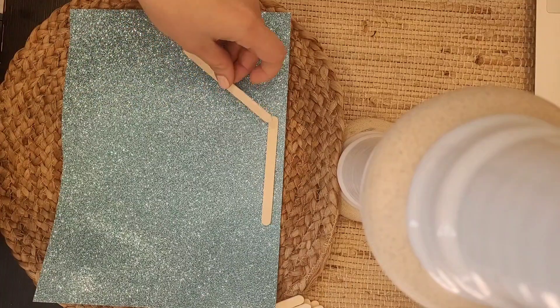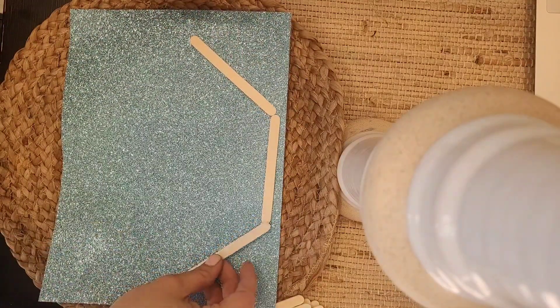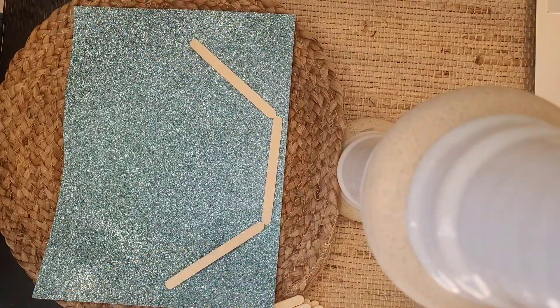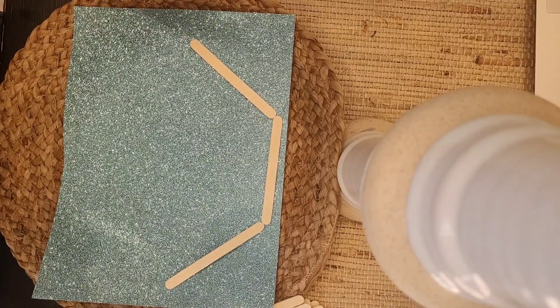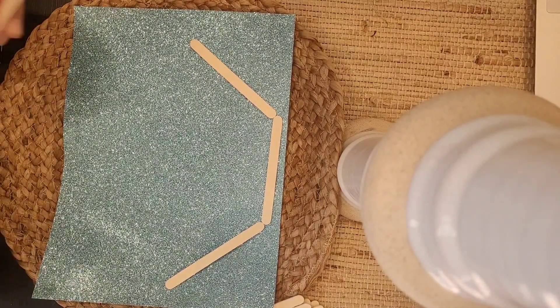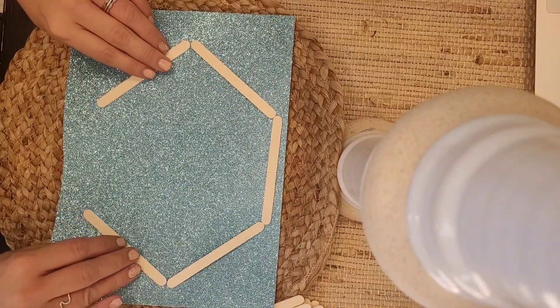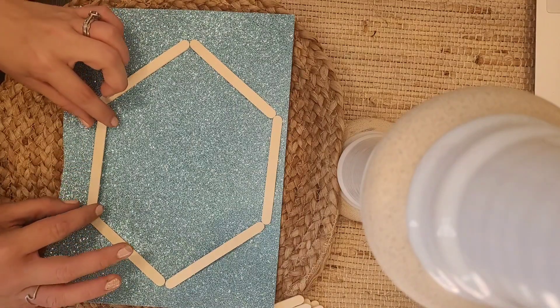So we're going to start by putting a popsicle stick at the top. Then we're going to, or line segment, then we're going to come off of it and make, put two more line segments down coming off of that. I'll give you a second. And you can always pause the video if you need to take a break. And then we're going to have two more line segments. And we're going to put in our last line segment.